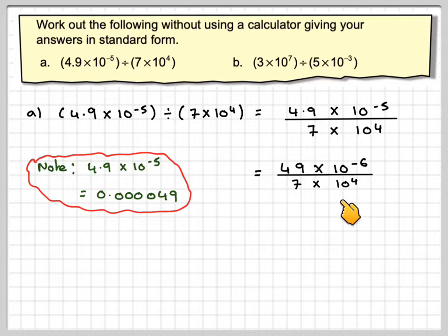Now it's very easy to do, because 49 divided by 7 is 7, and then we've got times 10. For the powers, because we're doing a division, we do minus 6 minus 4. That's the rule of indices for division of two numbers with the same base. So minus 6 minus 4 becomes 7 times 10 to the minus 10.